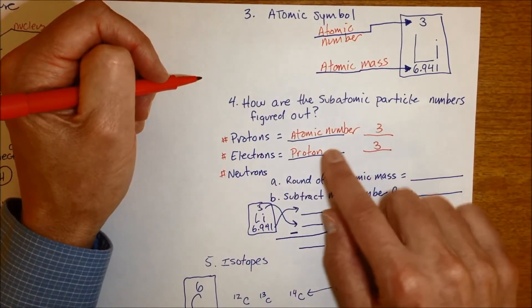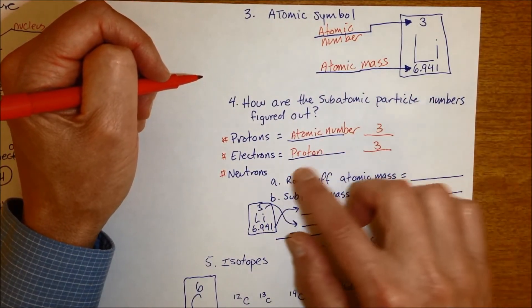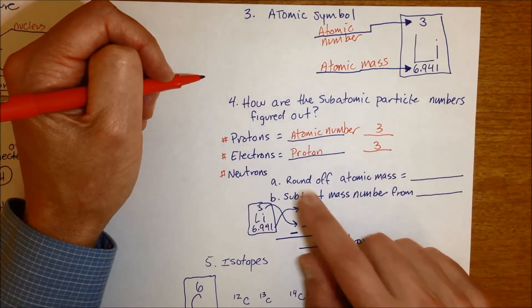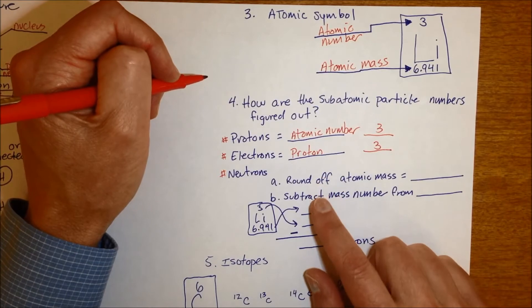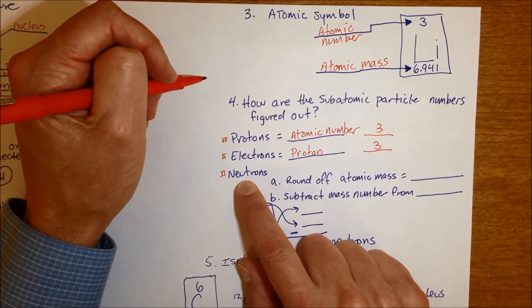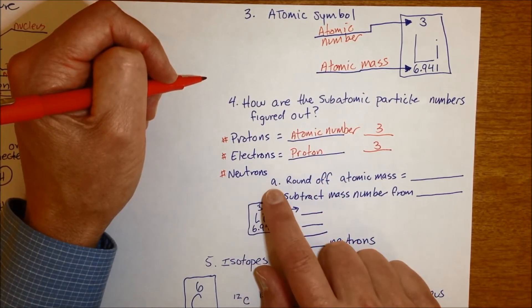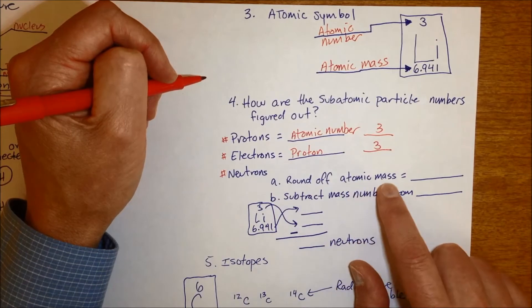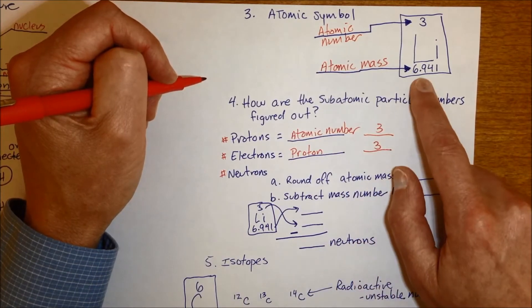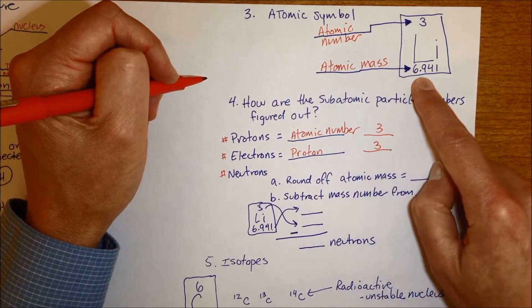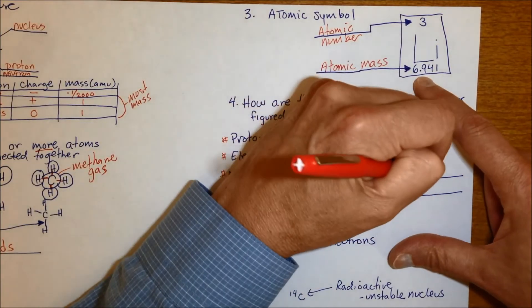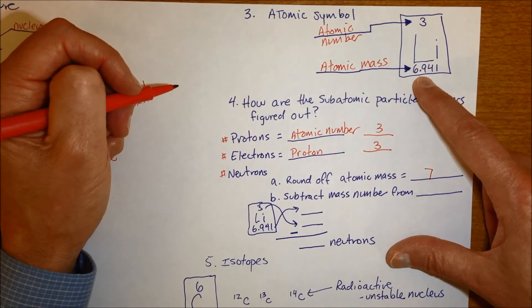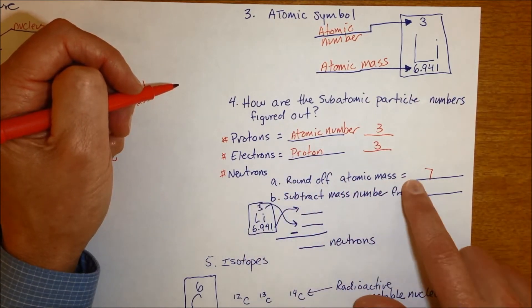Now sometimes neutrons is the same as that, sometimes it's not. So you can't assume because this is three, it's going to be three too. You have to use a little bit more detailed way to get to the neutrons, and this is what gives people the most trouble. So to figure out the number of neutrons an atom has, the first thing you do is you round off the atomic mass.